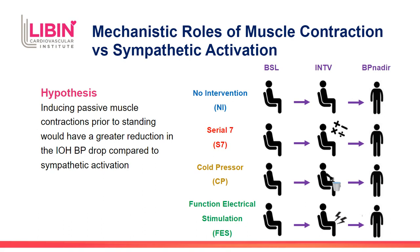Our hypothesis was that inducing passive muscle contractions prior to standing would have a greater reduction in the blood pressure drop seen in IOH compared to simply increasing sympathetic activity. IOH participants performed sit-to-stand maneuvers with interventions that either increased sympathetic activity — Serial 7 Stress Test or Cold Pressor Test — or an induced passive muscle contraction before standing via electrical stimulation. Data were analyzed at three time points: baseline values from the end of the 10-minute seated baseline, intervention values taken during the intervention while still seated, and blood pressure nadir values taken after standing at the lowest systolic blood pressure time point.